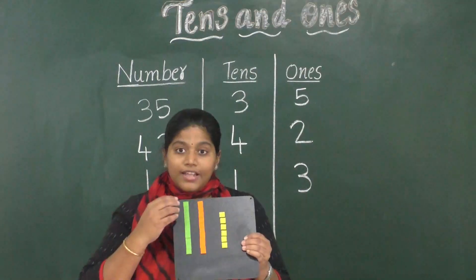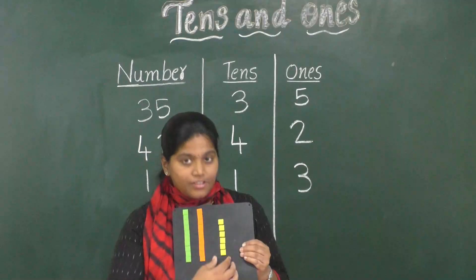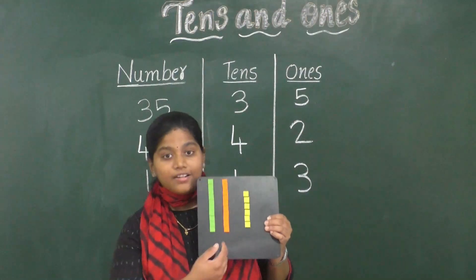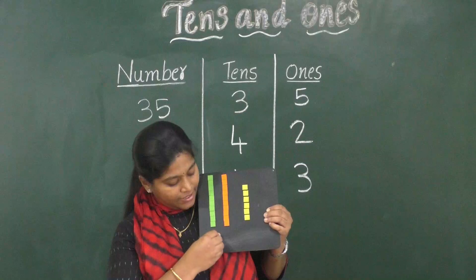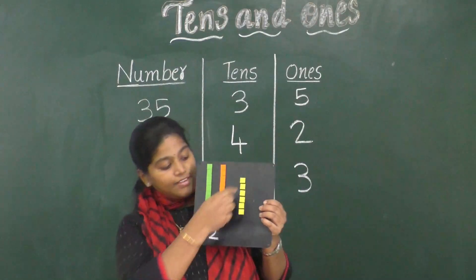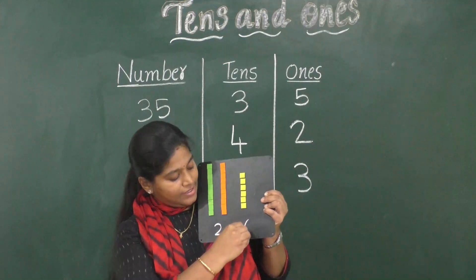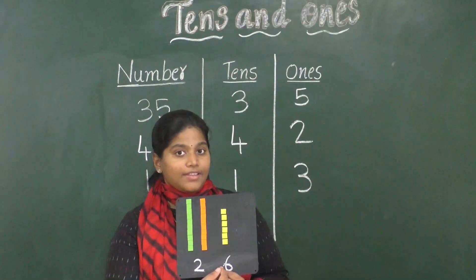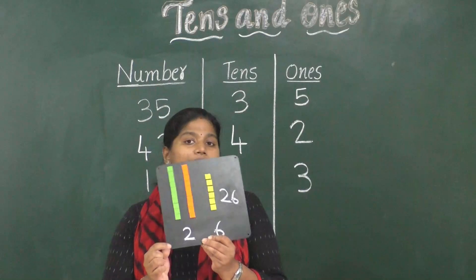So how many tens do we have here? We have two tens — the first set and the second set. So I will write two here. Then add the little ones to the end. How many ones? There are six squares, so I will write six here. So what is the number? Two tens and six ones — it is twenty-six.